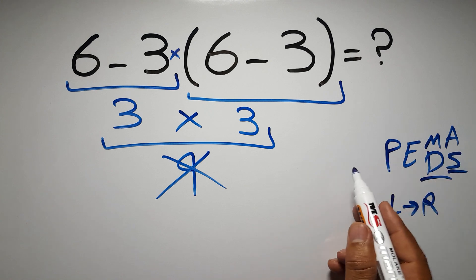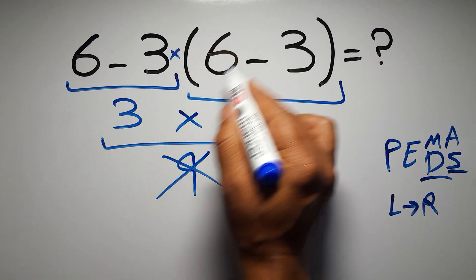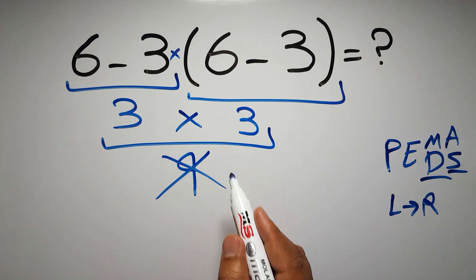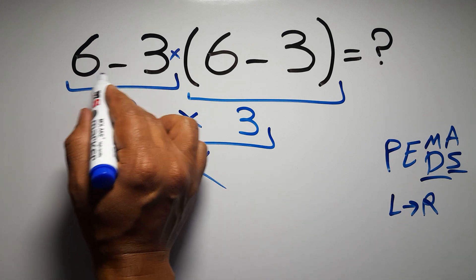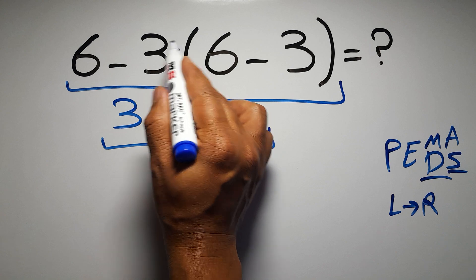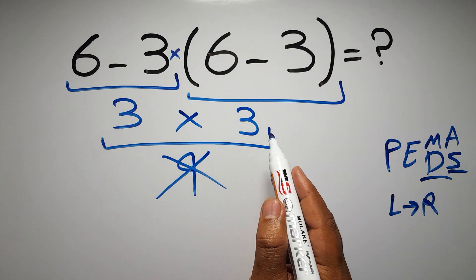So according to the PEMDAS, first we have to do these parentheses, then this multiplication, and finally this subtraction. If we do this subtraction before this multiplication or these parentheses, it is wrong.